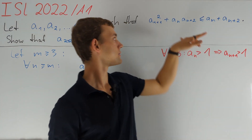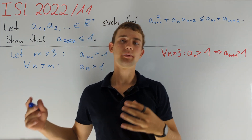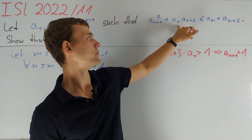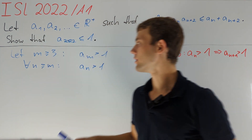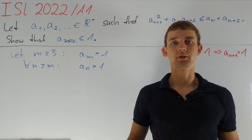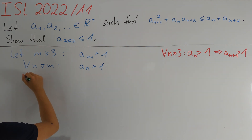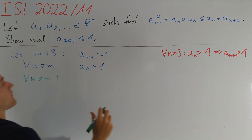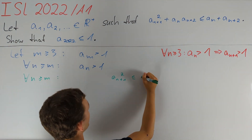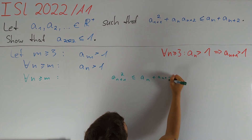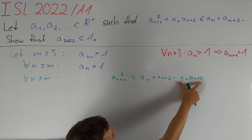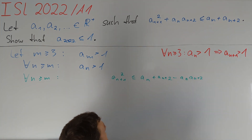The left side of our inequality has positive terms of degree two and it should be less than or equal to the right side which is linear — this is unlikely for large values of aᵢ. Since for all n ≥ m we have aₙ > 1, we can write that aₙ₊₁² is less than or equal to aₙ plus aₙ₊₂ minus aₙ aₙ₊₂. Since aₙ and aₙ₊₂ are greater than one, their product is greater than aₙ and greater than aₙ₊₂.